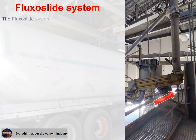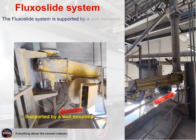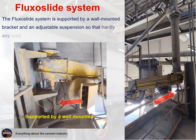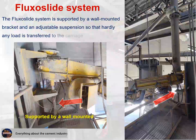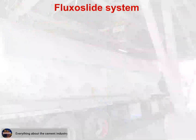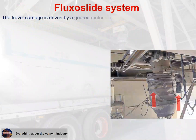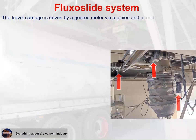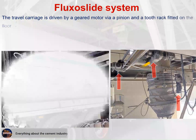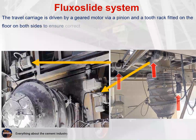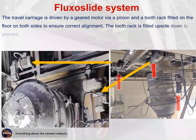The Fluxo slide system is supported by a wall-mounted bracket and an adjustable suspension so that hardly any load is transferred to the carriage. Operation method — the travel carriage is driven by a geared motor via a pinion and a tooth rack fitted on the floor on both sides to ensure correct alignment. The tooth rack is fitted upside down to prevent material from sticking to it, thus stabilizing operation.